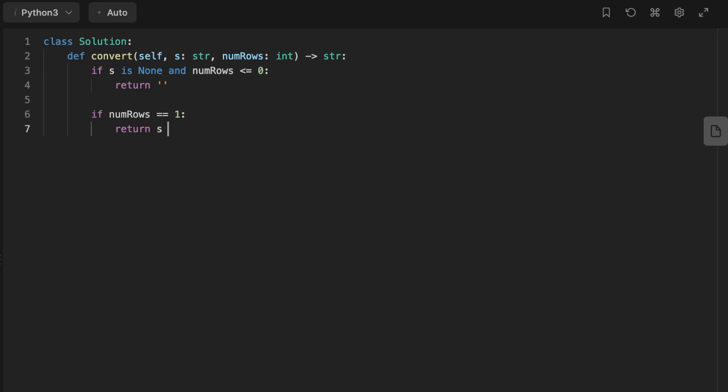And after that, we initialize a result string that can hold the final result string, and we also declare a variable that's gonna hold the steps that we're gonna jump to get the next letter. And we start looping for each row. After that, we're gonna start looping at each character in string with the step that we're gonna jump to get to the second letter.